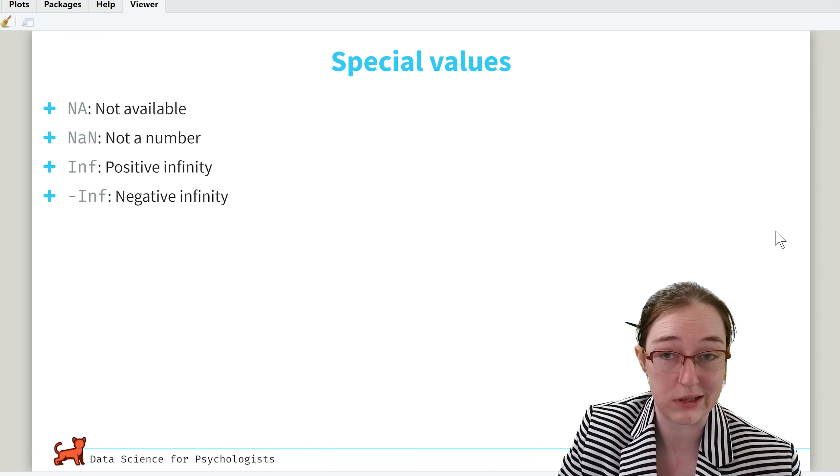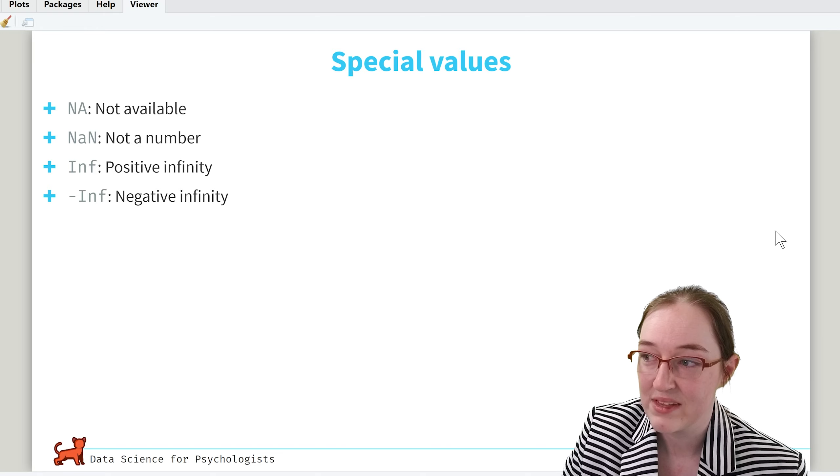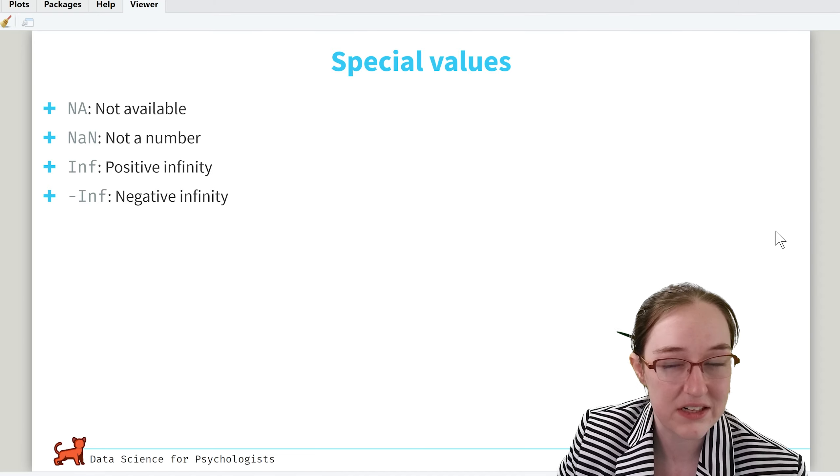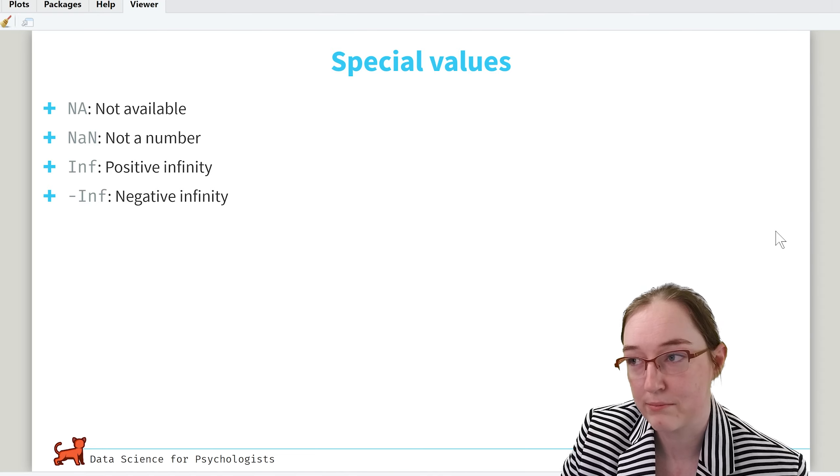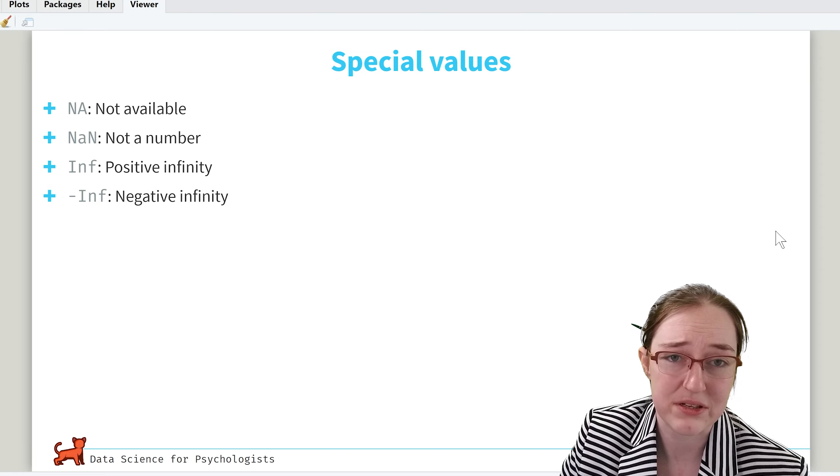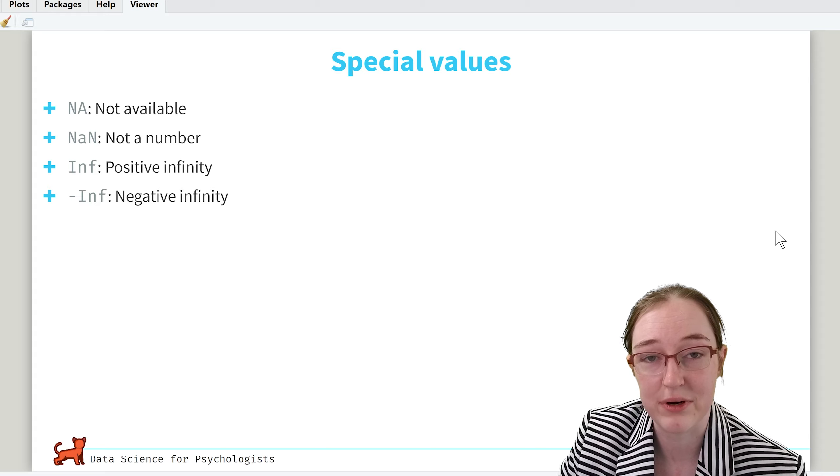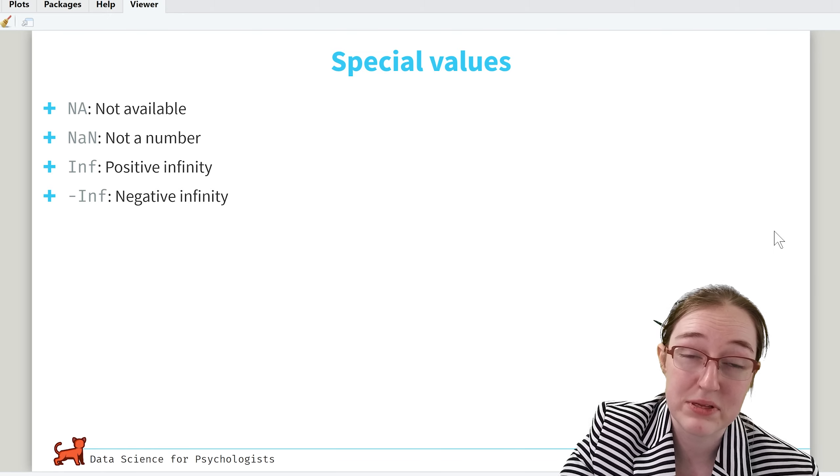So here are the four we're going to talk about. NA is not available, NaN is not a number, Inf technically is positive infinity and -Inf is negative infinity. You'll see a lot of NA for missing data, it's essentially what it is. NaN is you tried to do something and it gave you not a number. It's like a special case of not available.